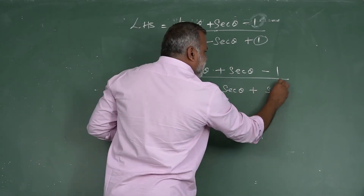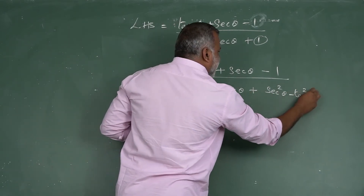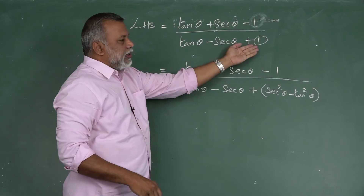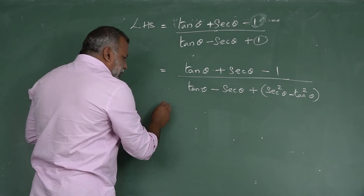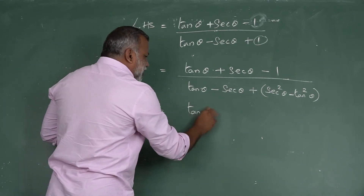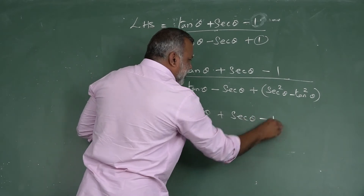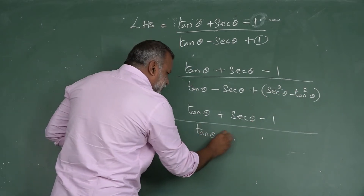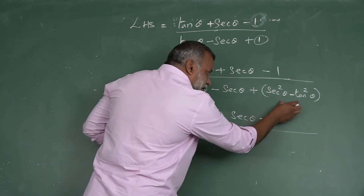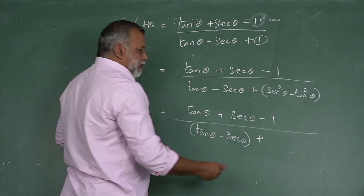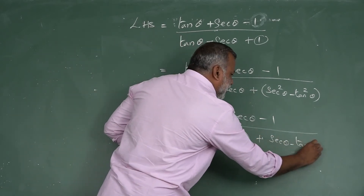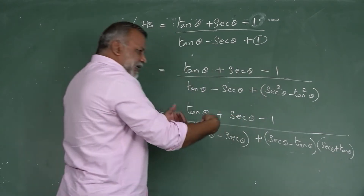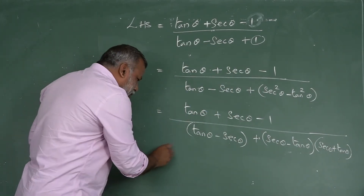Now we are removing the denominator's '1'. The denominator becomes tan θ - sec θ + sec²θ - tan²θ, which is in the form a² - b². We can factor this as (sec θ - tan θ)(sec θ + tan θ). The denominator has changed, so we need to look carefully at the signs.